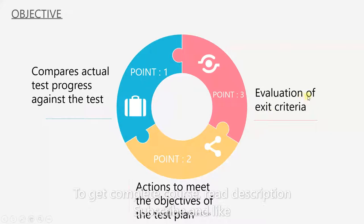The final objective is to evaluate the exit criteria. Each stage has its own exit criteria and this is something we keep an eye on under test monitoring and control. Until the criteria are met, that particular step will not end.